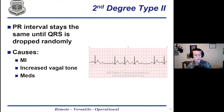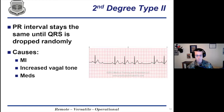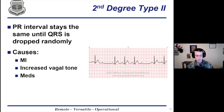Second-degree type two: the PR interval does not get longer — it stays the same — and then the QRS is just dropped. Causes are typically MIs or past MIs — things that have caused heart damage — increased vagal tone, and medications including beta blockers. In the analogy, the P wave wife is waiting at home, and sometimes the QRS husband comes home and sometimes he doesn't, but when he does come home it's always at the same time.